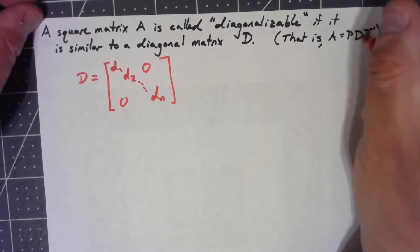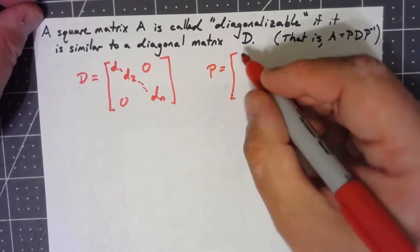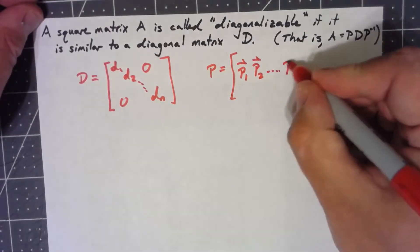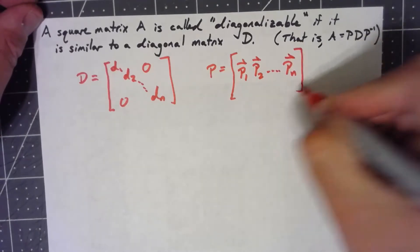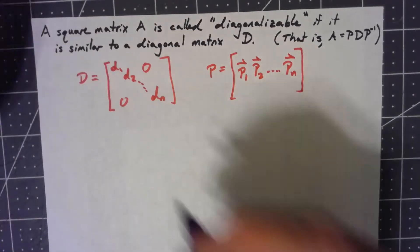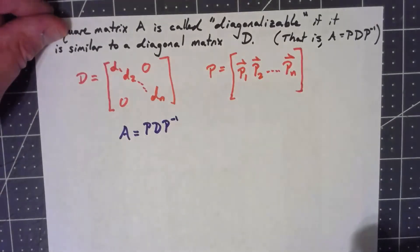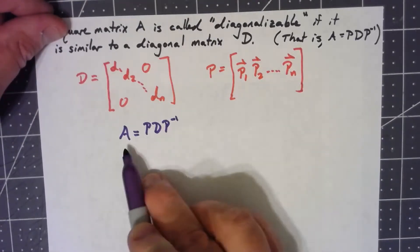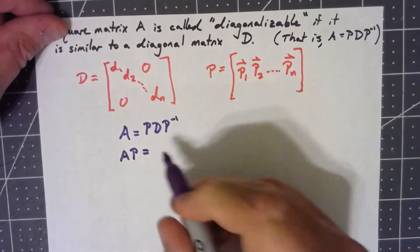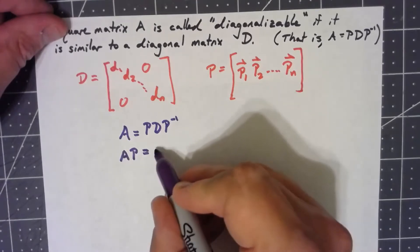Now this matrix P that's used for the similarity — I want to break that down a little bit too. Just like we've done several times, let's think about it as a bunch of different column vectors stuck together to make a matrix. We have that A equals P times D times P inverse. If we take that equation and multiply on the right by P, we get A times P equals P D, since P inverse P is the identity.